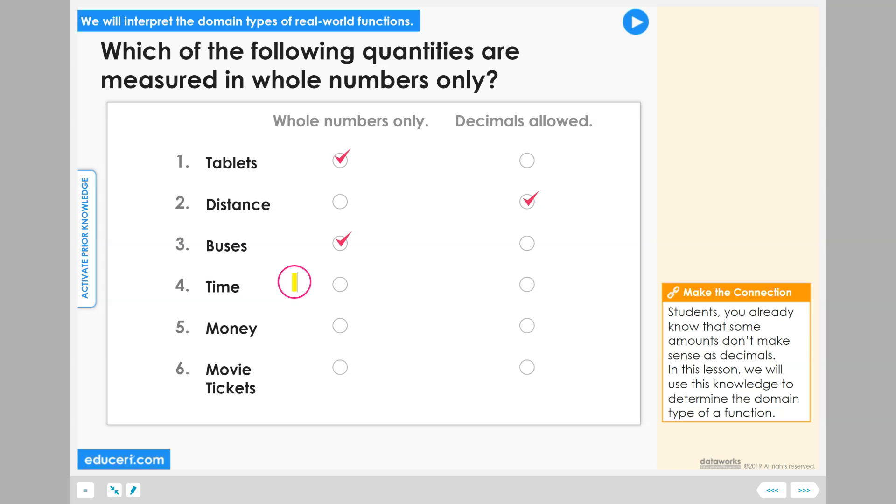Time. You can have one minute, two minutes, three minutes, but you can also have half of a minute or a couple of seconds. So decimals are allowed when talking about time.